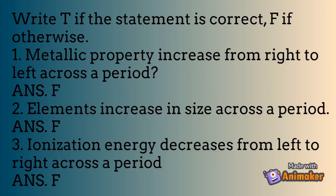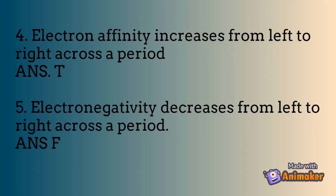Write T if the statement is correct, F if otherwise. 1. Metallic property increases from right to left across a period — answer: False. 2. Elements increase in size across a period — answer: False. 3. Ionization energy increases from left to right across a period — answer: True. 4. Electron affinity increases from left to right across a period — answer: True. 5. Electronegativity decreases from left to right across a period — answer: False.